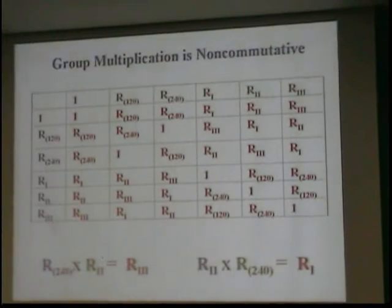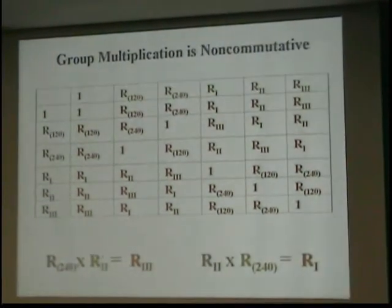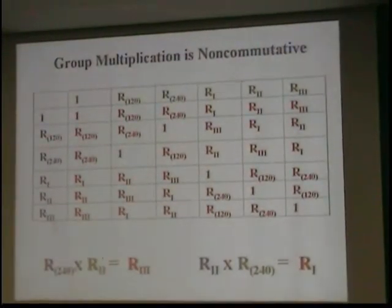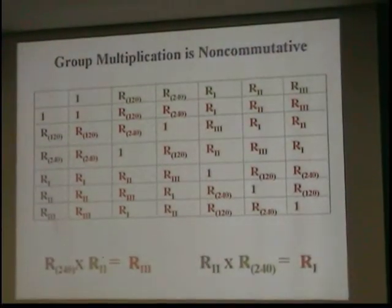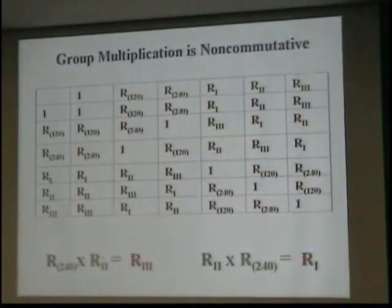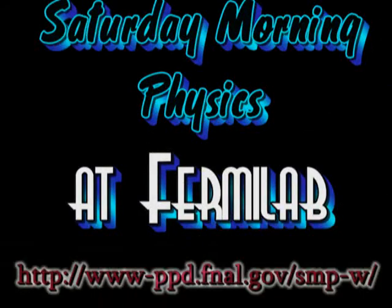Here we did it. Rotation through 240 times reflection about 2 equals reflection about 3. I do them in the opposite order. Reflection about 2 times 240 gives me the opposite. Gives me a different answer. Okay. It's an amazing topic. I couldn't believe it.